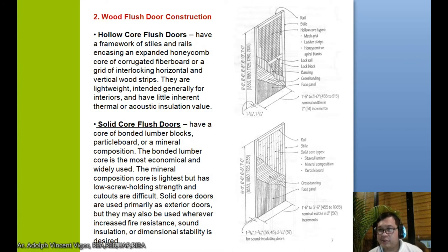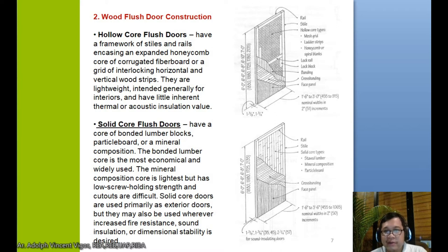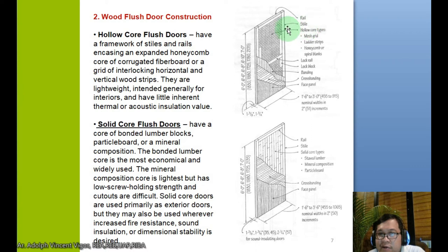For wood flush door construction — hollow core flush doors have a framework of stiles and rails enclosing an expanded honeycomb core of corrugated fiberboard or a grid of interlocking horizontal and vertical wood strips. They are lightweight, intended generally for interiors, and have little inherent thermal or acoustic insulation value. Components include the rail at top, the stile, the hollow core mesh — which may be ladder, steps, honeycomb, or spiral — the lock rail, lock block, veneer, cross banding, and face panel.